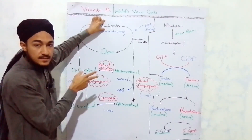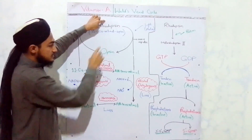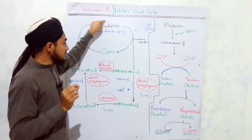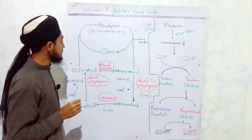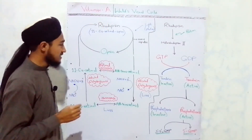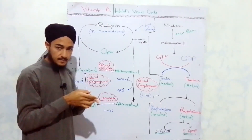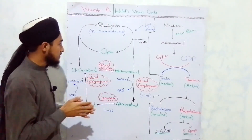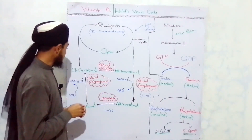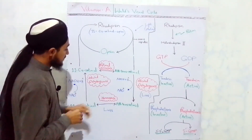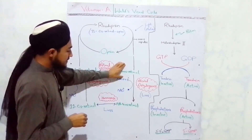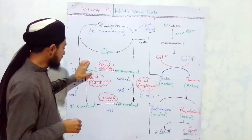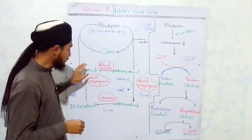This entire cycle occurs in millionths of seconds — the process is extremely fast. However, not all of the all-trans retinal can be isomerized to the 11-cis retinal form within the retina.